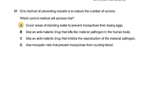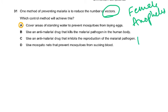Question 31: One method of preventing malaria is to reduce the number of vectors. The vector for malaria is the female Anopheles mosquito — not all mosquitoes, only specific species. The method is to cover areas of standing water to prevent mosquitoes from laying eggs, because mosquitoes lay eggs on stagnant water where the larvae and pupae develop and then the adult mosquito flies off. That is why after rains, malarial cases increase.